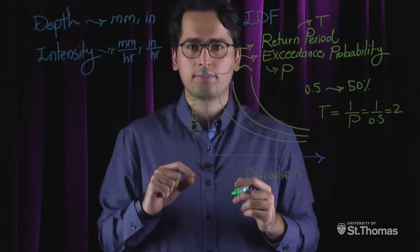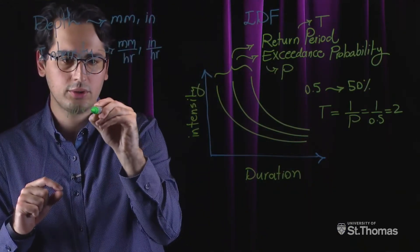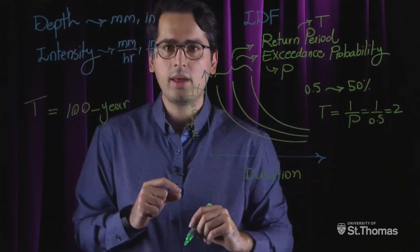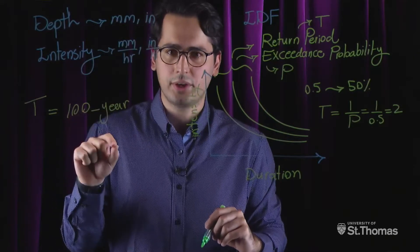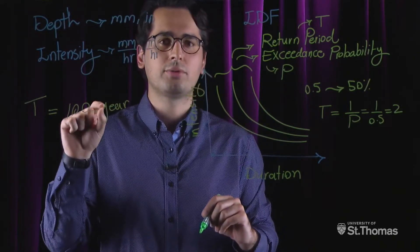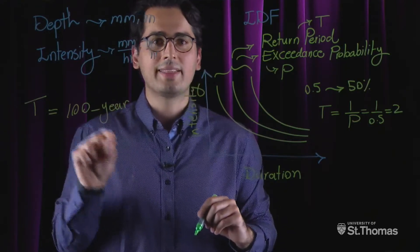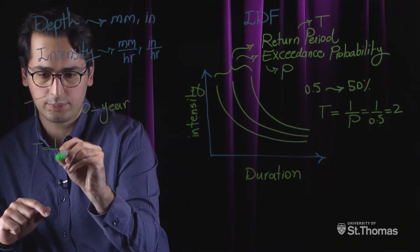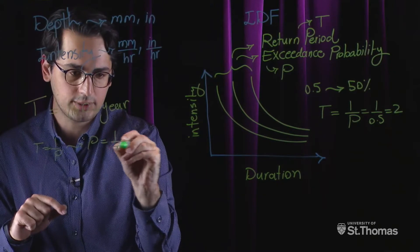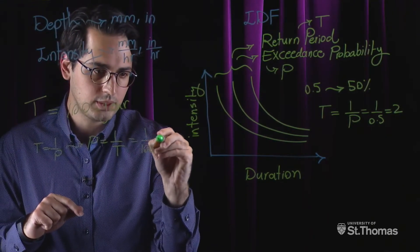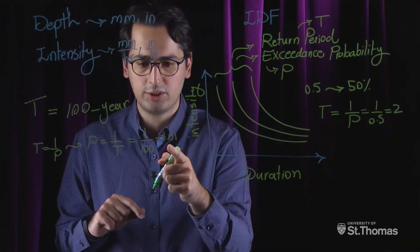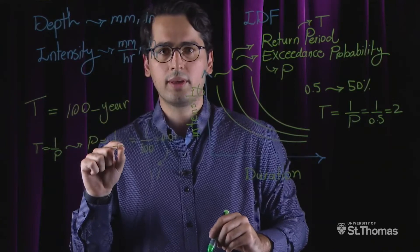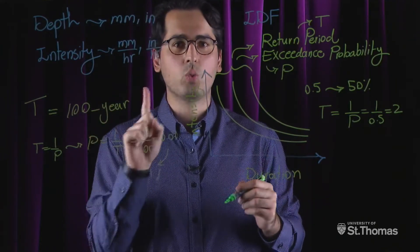Let's interpret a 100-year storm or 100-year rainfall event. This tells you that in any given 100-year period, the 100-year storm occurs at least once. The exceedance probability of a 100-year storm is 1 over 100, because if T equals 1 over P, then P equals 1 over T. So 1 over 100 equals 0.01, which is the annual exceedance probability — or 1% expressed as a percent. This means that in any given year, there is a 1% chance of a 100-year storm occurring.